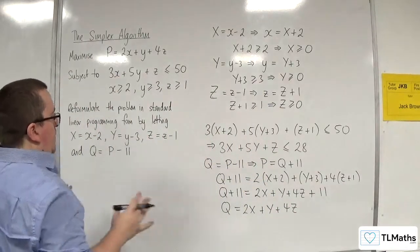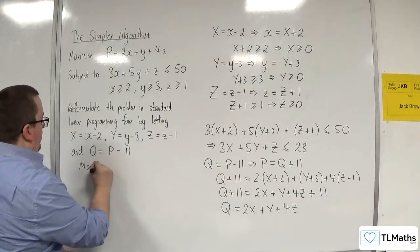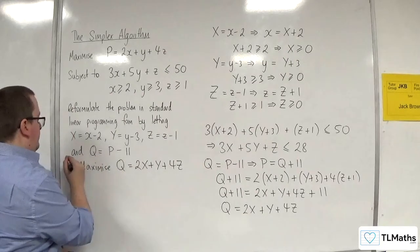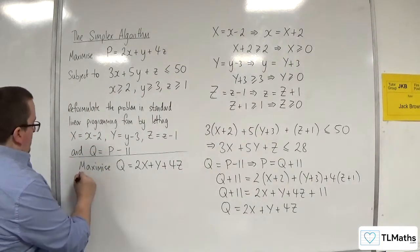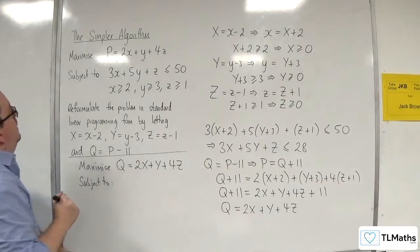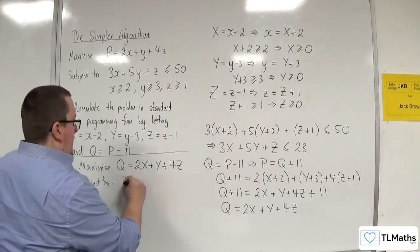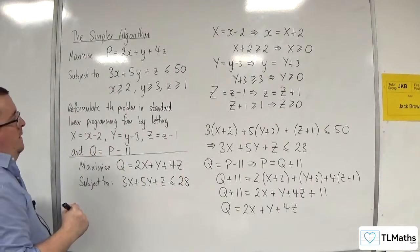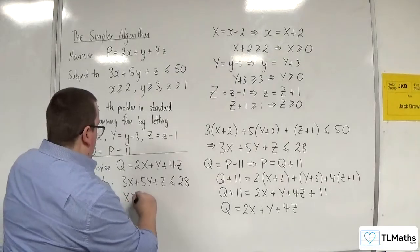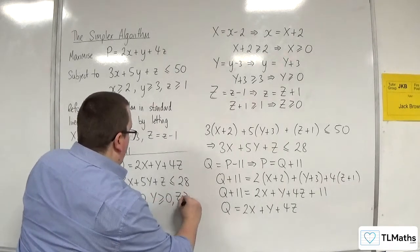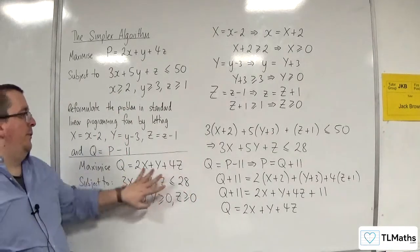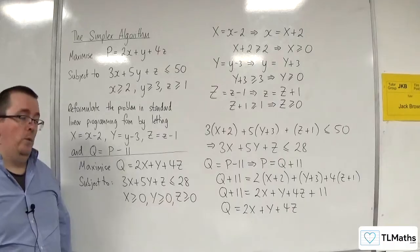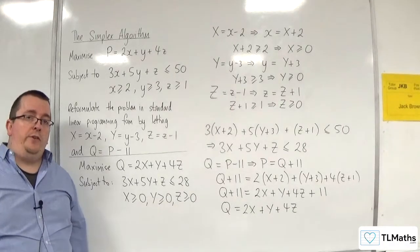Our linear programming problem now becomes: maximize Q = 2X + Y + 4Z, subject to 3X + 5Y + Z ≤ 28, and X ≥ 0, Y ≥ 0, Z ≥ 0. This can now be solved using the simplex algorithm, which solves the original problem while avoiding the two-stage simplex algorithm.